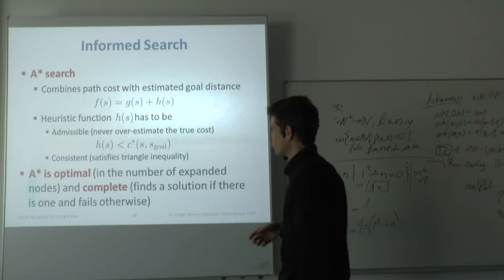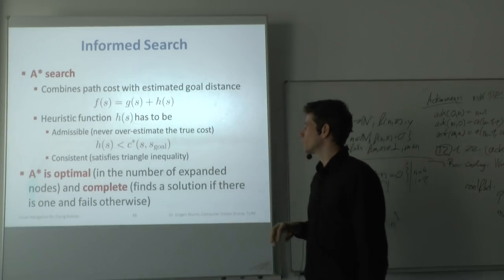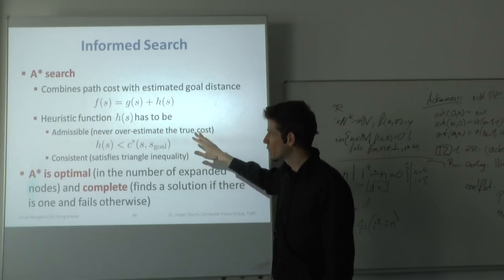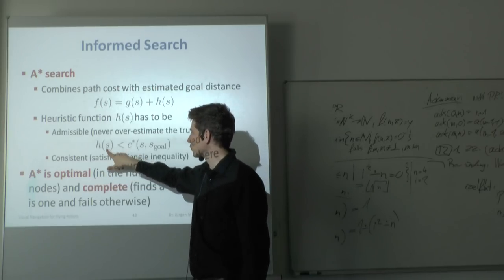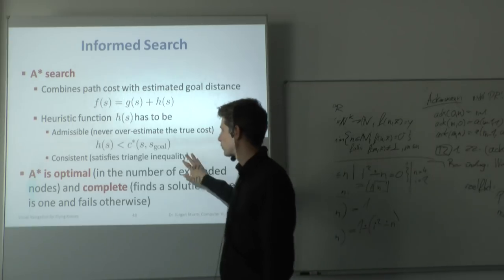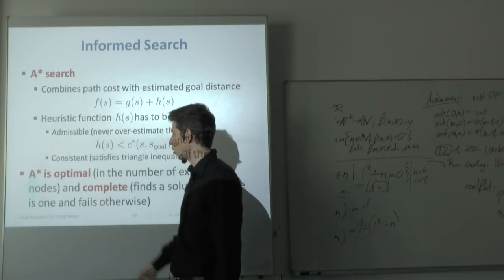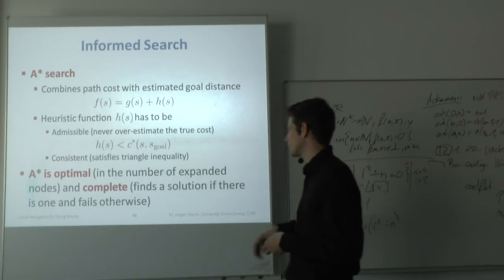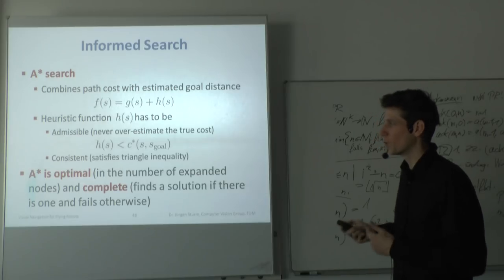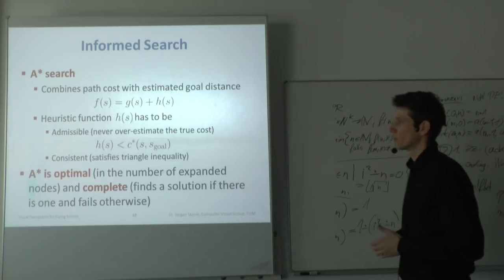This brings us to the A* algorithm, which uses a heuristic composed of cost-so-far plus estimated cost-to-goal. For A* to guarantee optimality, the heuristic function must not overestimate the true cost — it must be admissible (h(n) ≤ actual cost) and satisfy the triangle inequality for consistency. A* can be proven to find the shortest path and minimizes the number of expanded nodes — no other algorithm can expand fewer nodes and still find the optimal solution. It is also complete.